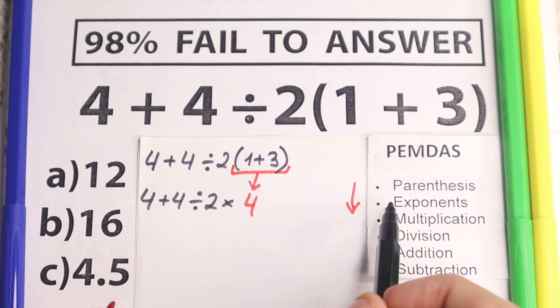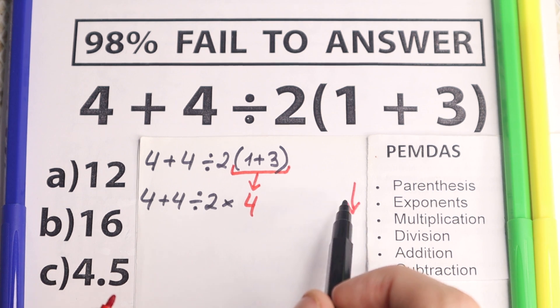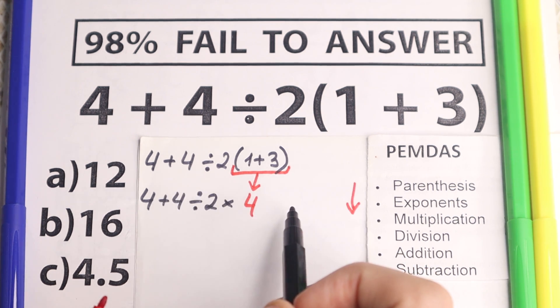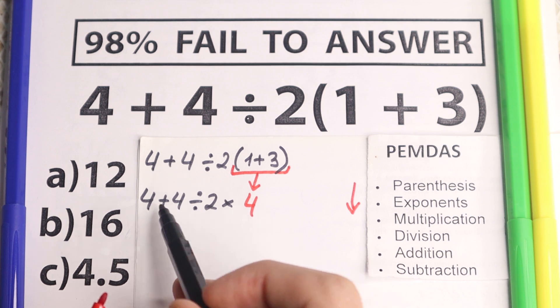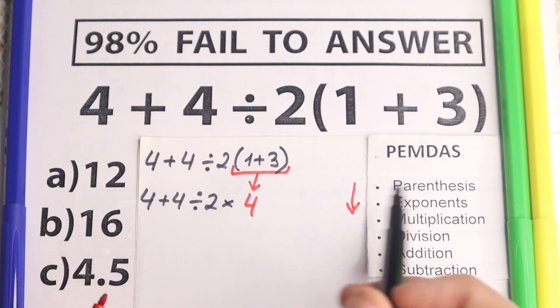The next step according to PEMDAS is exponents. So let's look at it. Are there any exponents right here, cubes, 4th power, 10th power right here? No, I don't see any of those. We have like 1st power all the time, so we just skip this part. Let's go to the next part.